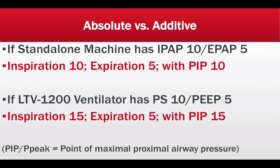However, on the LTV1200 and other ventilators capable of providing invasive modes, this is totally different. When pressure support is set at 10 and PEEP is set at 5, when the patient initiates inspiration, the ventilator will deliver 15 centimeters of water pressure — because pressure support is in addition to PEEP, so 10 plus 5 equals 15. Inspiratory pressure would be 15, and when the patient exhales, it will be 5 centimeters of water pressure.